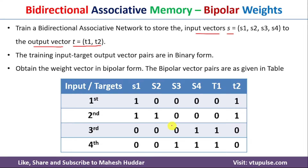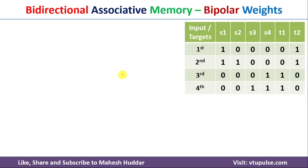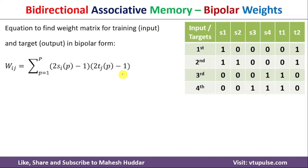The first question is: what is the equation to train the bidirectional associative memory to get the bipolar weights? The equation we use is W_IJ equals the sum from P equal to 1 to 4 — where 4 is the number of inputs.